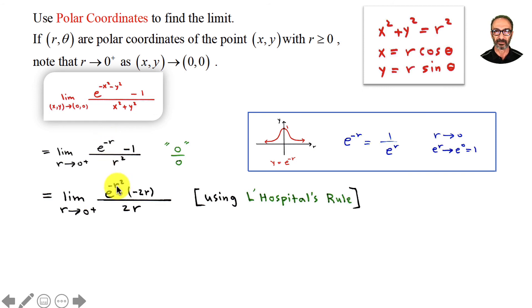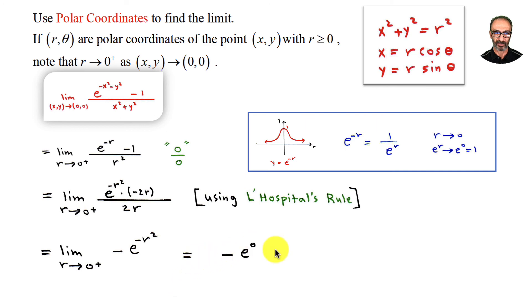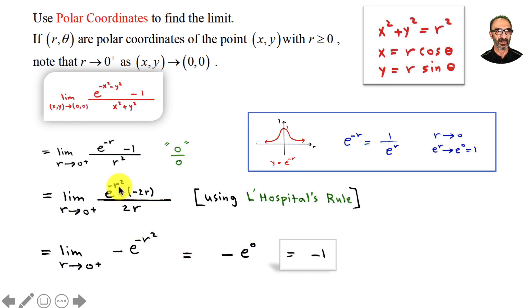Using L'Hôpital's rule: the derivative of e^(−r²) is e^(−r²)·(−2r) by the chain rule d/dr[e^u]=e^u·u′. The derivative of r² in the denominator is 2r. The 2 cancels and the r cancels, leaving −e^(−r²). Applying r=0: that's −e^0 = −1. So the limit is −1.